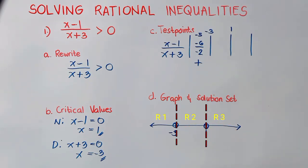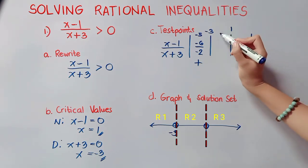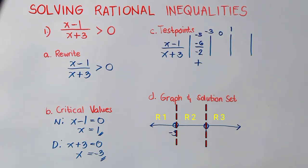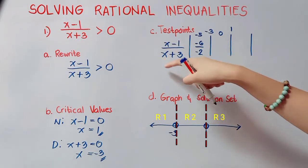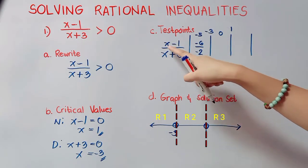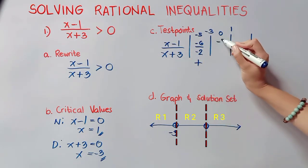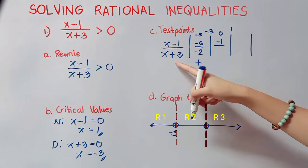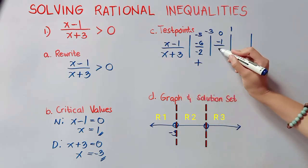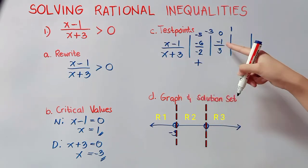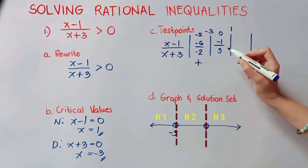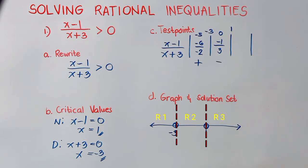Next is region 2. Think of a number in between negative 3 and 1. I will choose 0. So 0 minus 1 is negative 1, all over 0 plus 3 is 3. Negative divided by positive results in a negative answer.